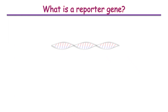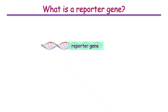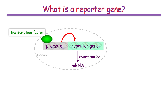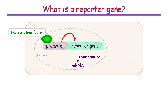A reporter gene is a piece of DNA — a special piece of DNA — that is attached to another segment of DNA known as a promoter. The promoter controls when, where, and how strongly the reporter gene is expressed. When a transcription factor that binds to the promoter is present, it stimulates transcription of the reporter gene into messenger RNA, which occurs in the cell's nucleus. The messenger RNA can then enter the cell's cytoplasm, where ribosomes translate it into the reporter protein. The amount of protein expressed is therefore a direct measure of the activity of the promoter.